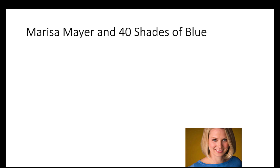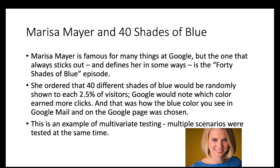Here's a famous multivariate testing example: the rumor says that when Marissa Mayer was working at Google, she overheard two designers arguing about which shade of blue to use for the Google icon. She asked why test only two, and ordered 40 different shades of blue to be randomly shown to each 2.5% of Google's visitors — 100% divided by 40 variants equals 2.5% each. Google then determined which color earned more clicks, and that's how the blue in the Google icon was chosen. Only companies with large traffic volume like Google can afford this kind of multivariate testing.